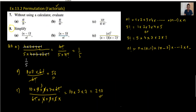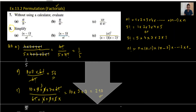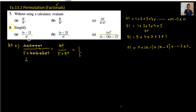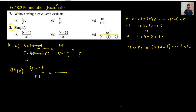Now the main important part is question number 8: how we can work without using a calculator, as we cannot use the calculator for an exam. Part A: we have n minus 1 factorial divided by n factorial. As I've told you, n factorial is n multiplied by n minus 1 factorial. So the n minus 1 factorial cancels out and your answer is 1 over n, and we are done.